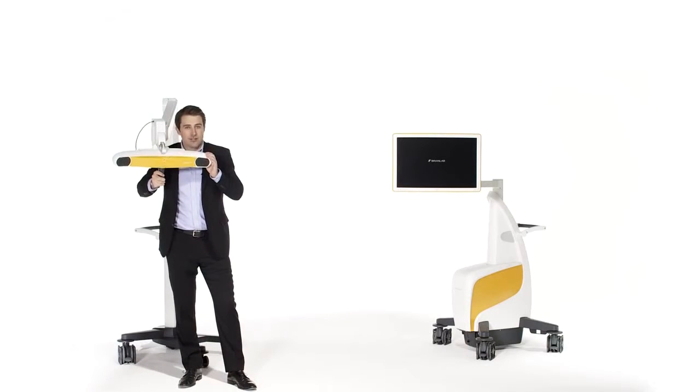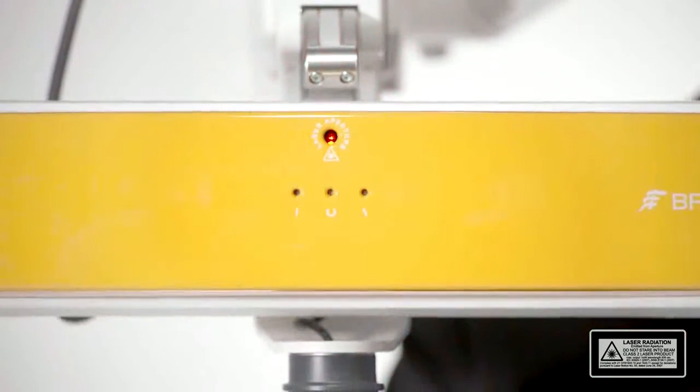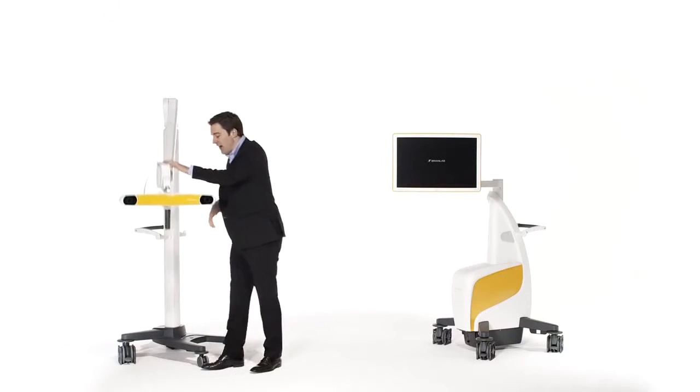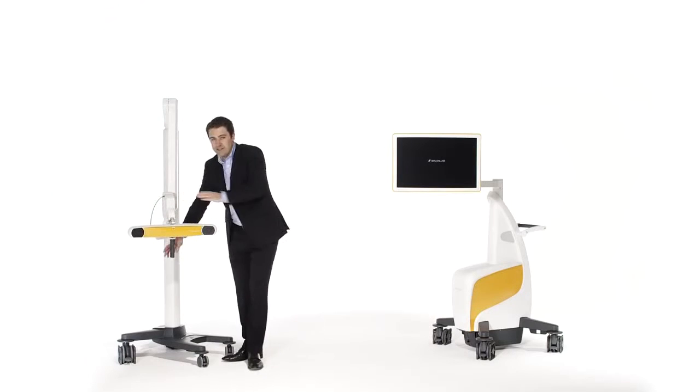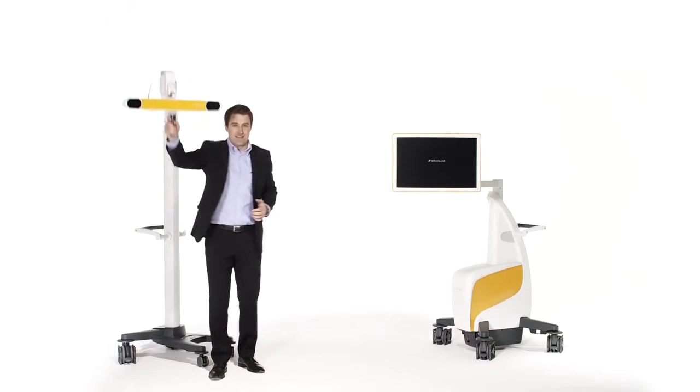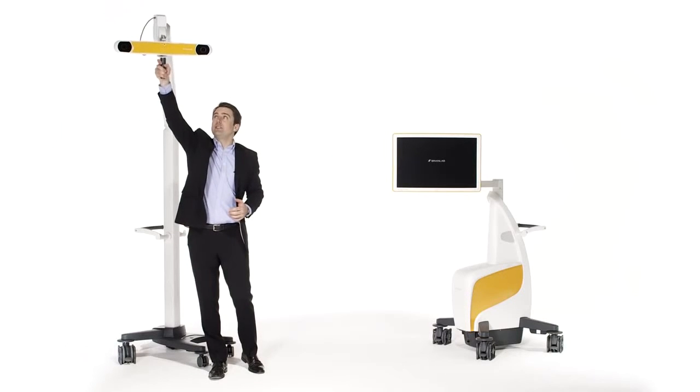The laser pointer is valuable for establishing the camera position even before the system is turned on. The camera stand offers a range and height adjustment from 100 cm or 39 inches up to 216 cm or 85 inches.